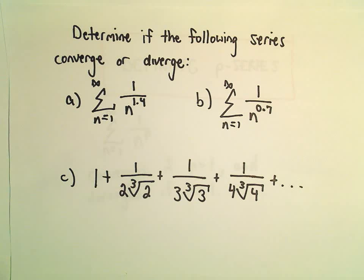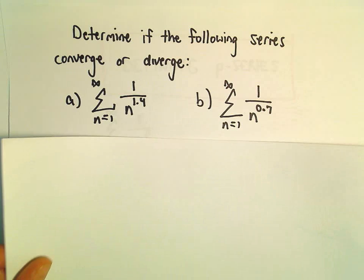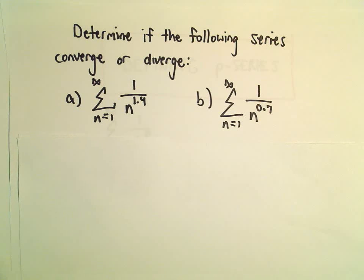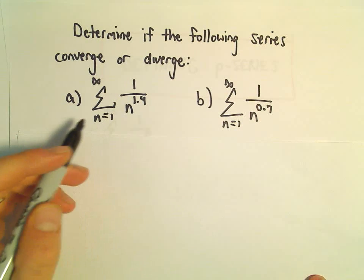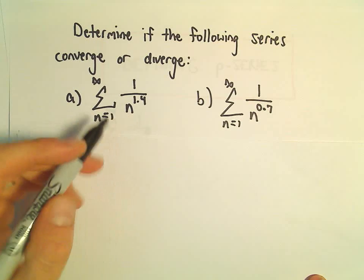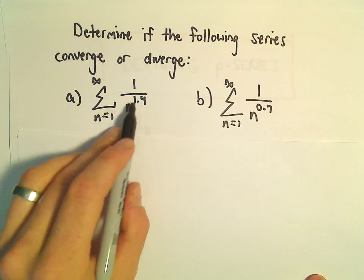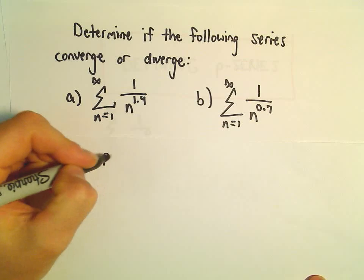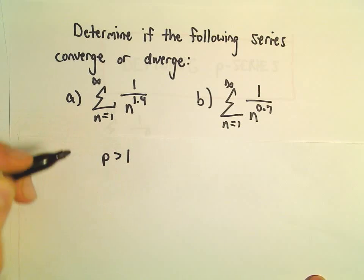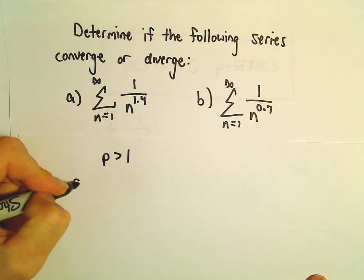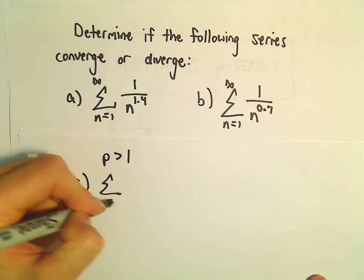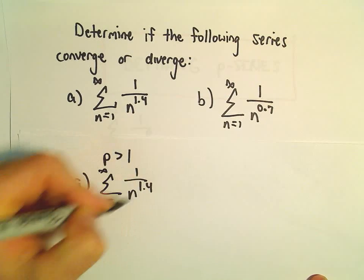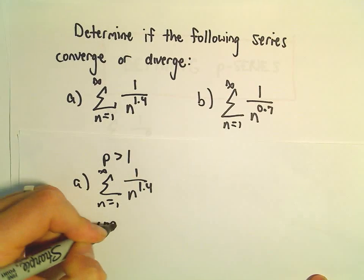A couple of easy questions — we're going to figure out if they converge or diverge. For part a, we've got 1 over n to the 1.4. Since our power p is greater than 1, our first series simply converges.